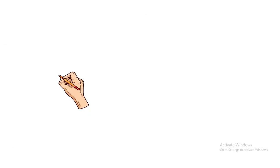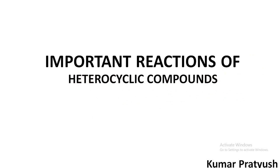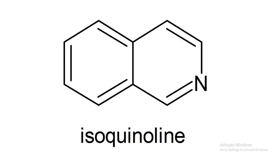So viewers, let's start with the important reactions of heterocyclic compounds — firstly we will start with structure. This is the basic structure of isoquinoline. You can see that isoquinoline belongs to a fused heterocyclic compound category, which includes a fusion of a benzene ring and a pyridine ring.